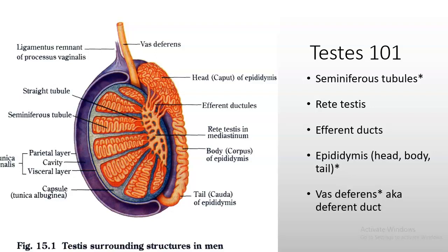The tail of the epididymis comes around the other side and turns into the vas deferens, also known as the deferent duct. The purpose of the vas deferens is to propel sperm into the urethra. It's important to be able to label the seminiferous tubules, the epididymis, and the vas deferens and know their functions.